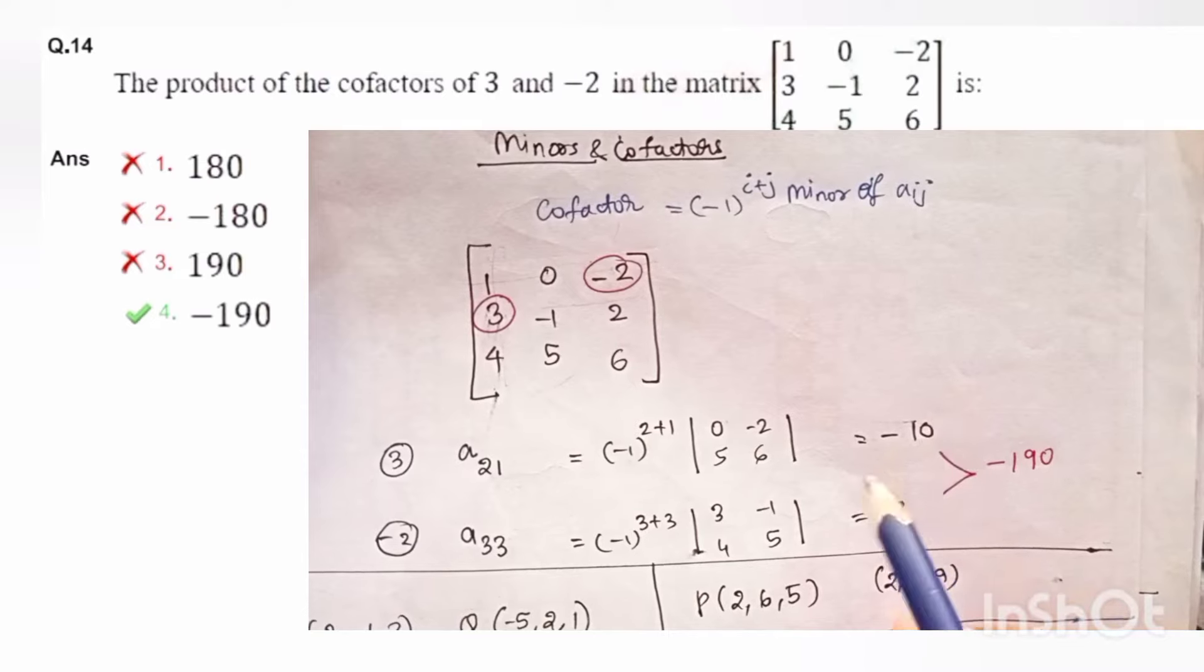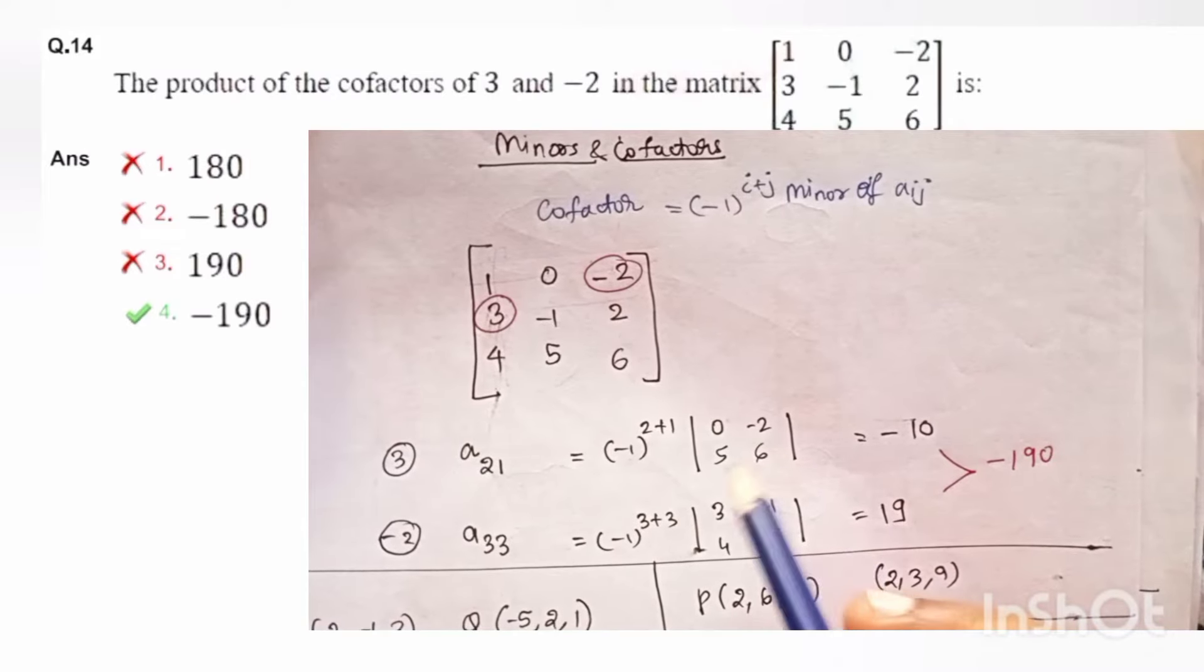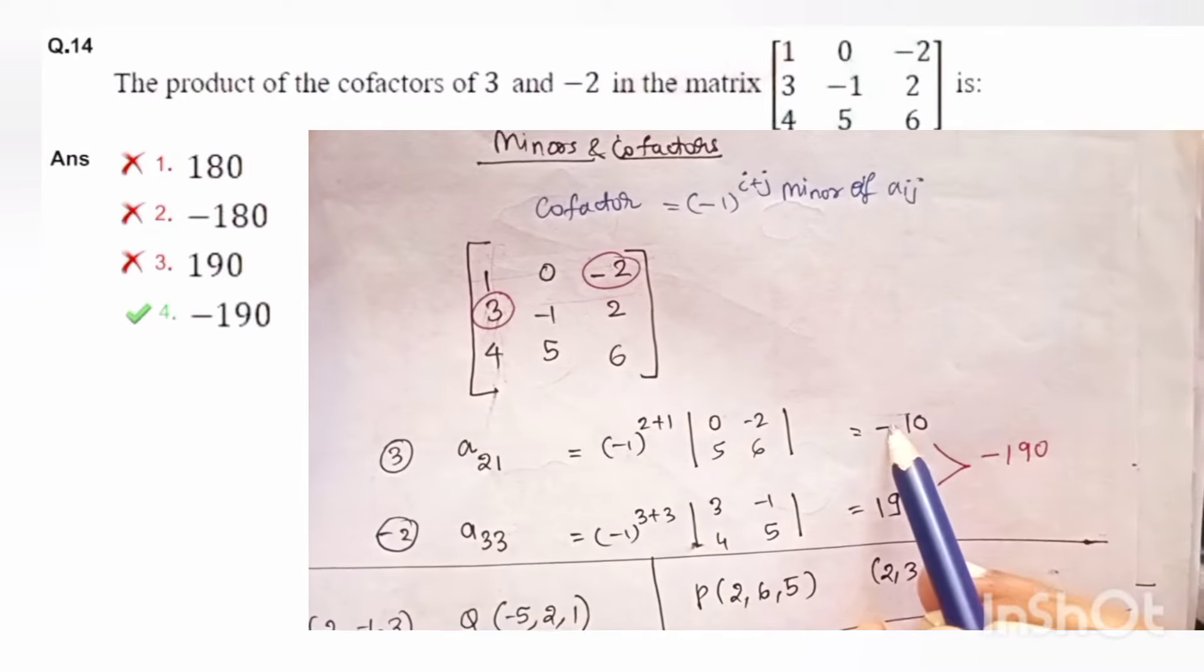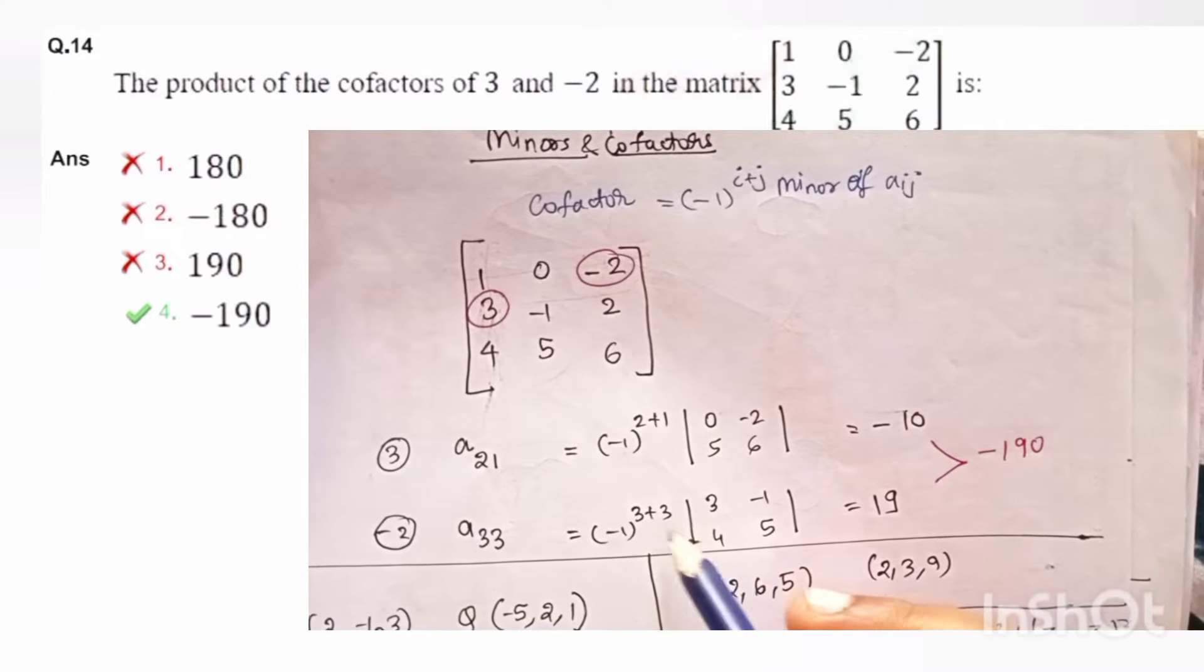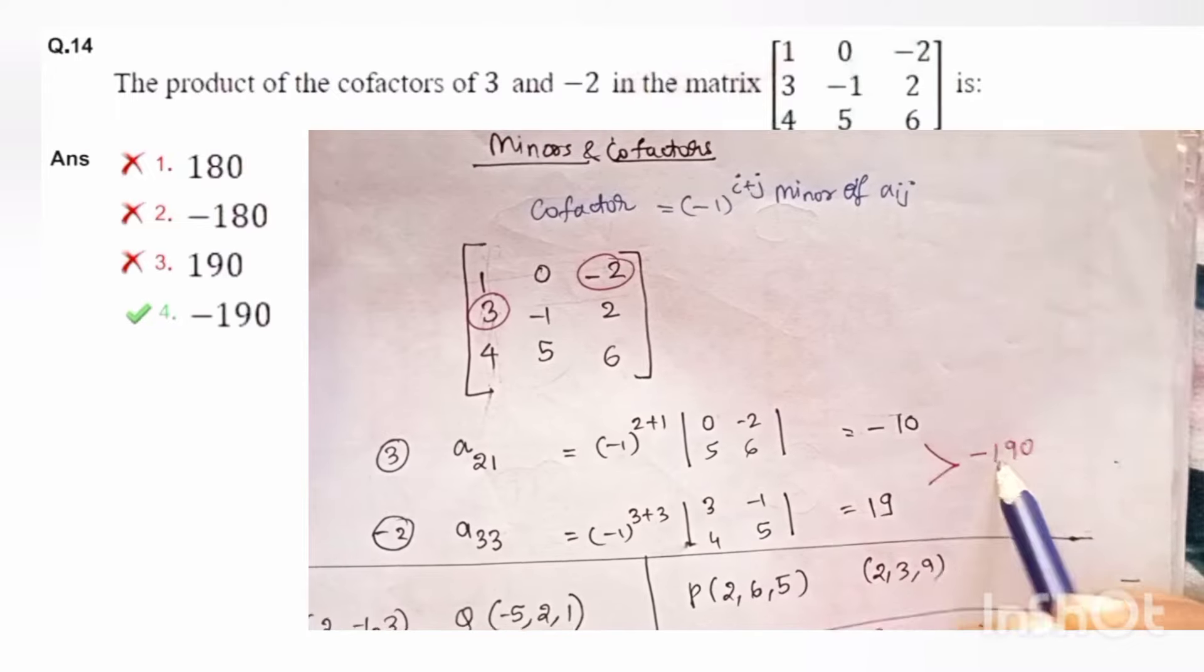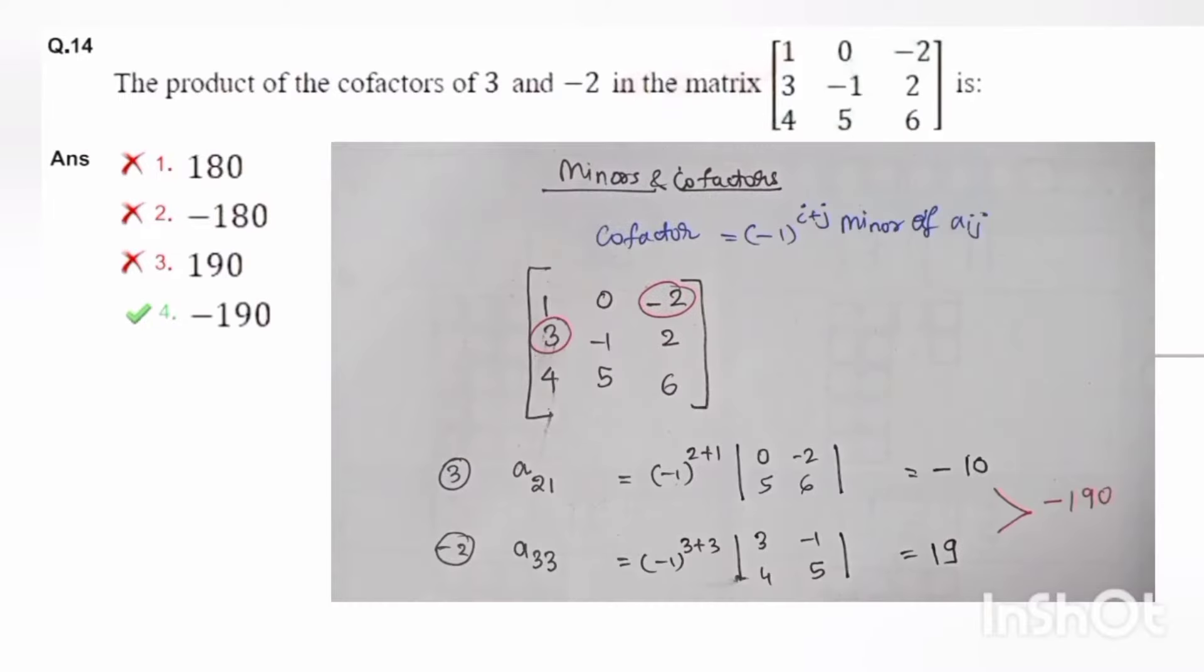The first value is minus 10, second value is 19 and the question is product of it. So minus 10 into 19 you have to take. The answer comes out to be minus 190. It was a simple question but little lengthy.